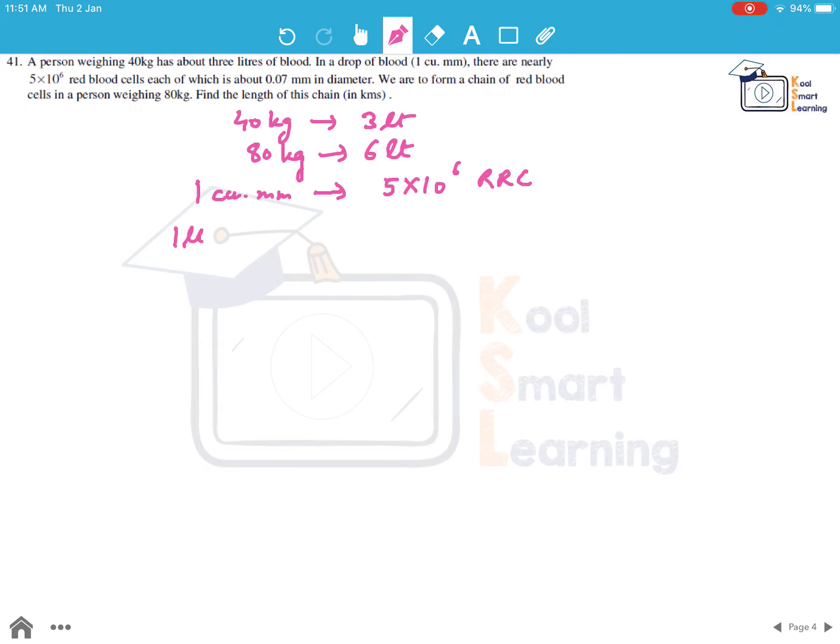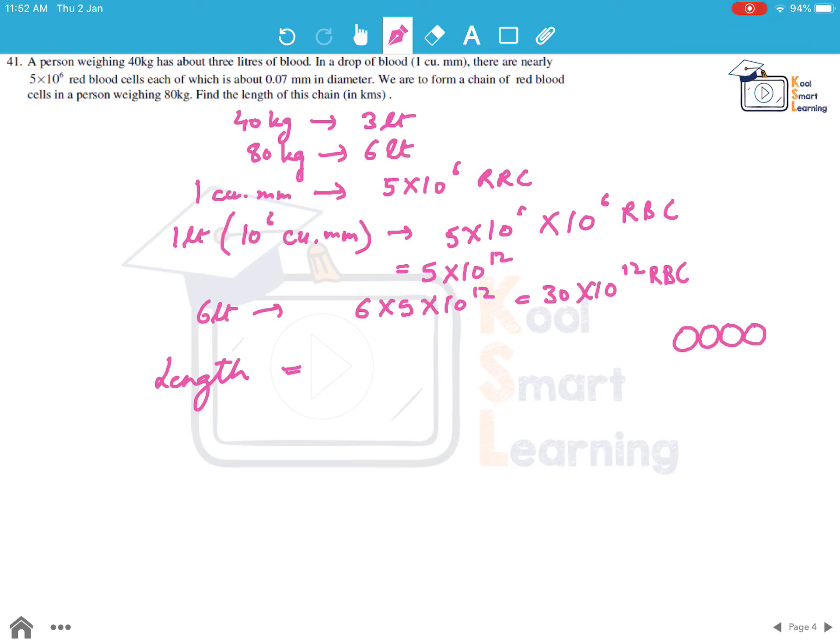Now 1 drop which is 1 cubic mm has 5 into 10 to the power 6 RBCs. Now 1 litre which is 10 to the power 6 cubic mm will have 5 into 10 to the power 6 into 10 to the power 6 RBCs, which is 5 into 10 to the power 12. 6 litres will have 6 into 5 into 10 to the power 12 which is 30 into 10 to the power 12 RBCs. So if we are arranging them in a chain, the length added by each RBC is the diameter which is 0.07 mm.